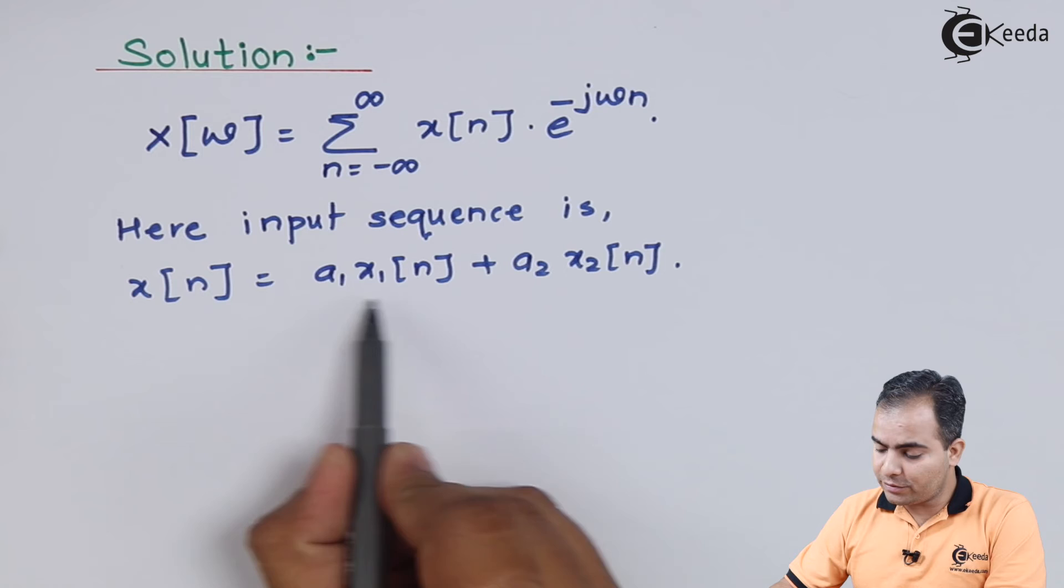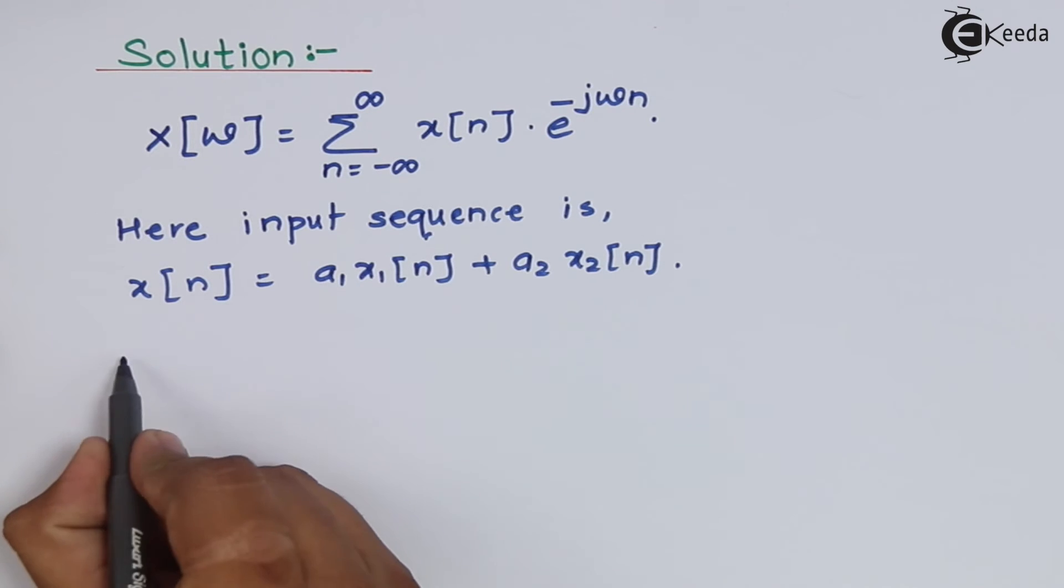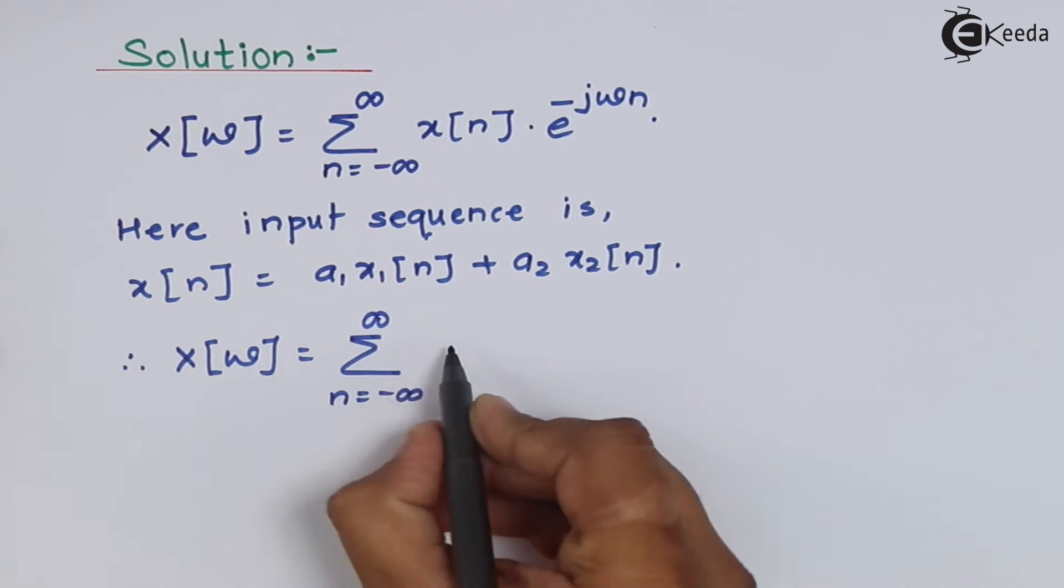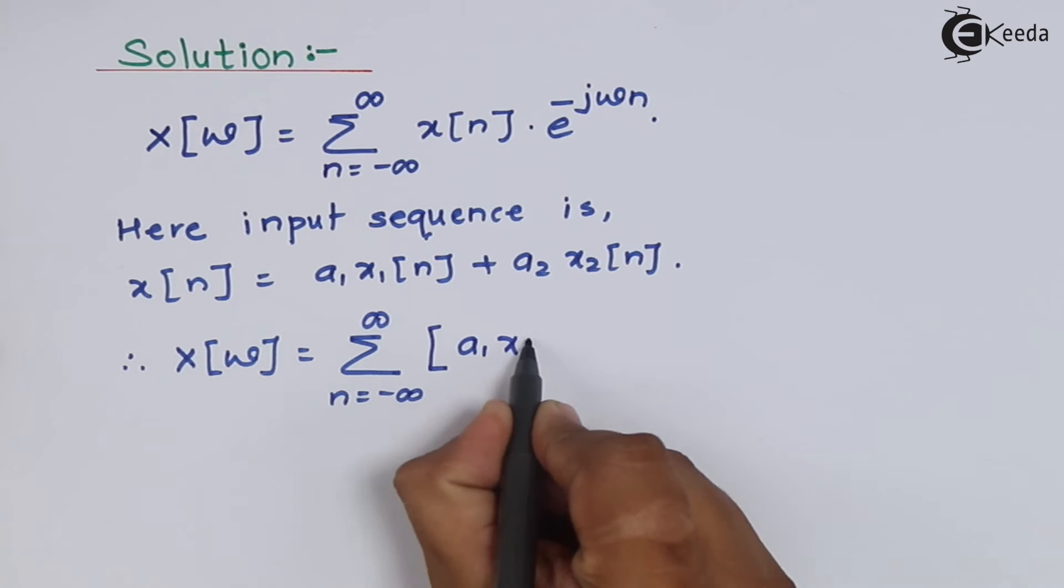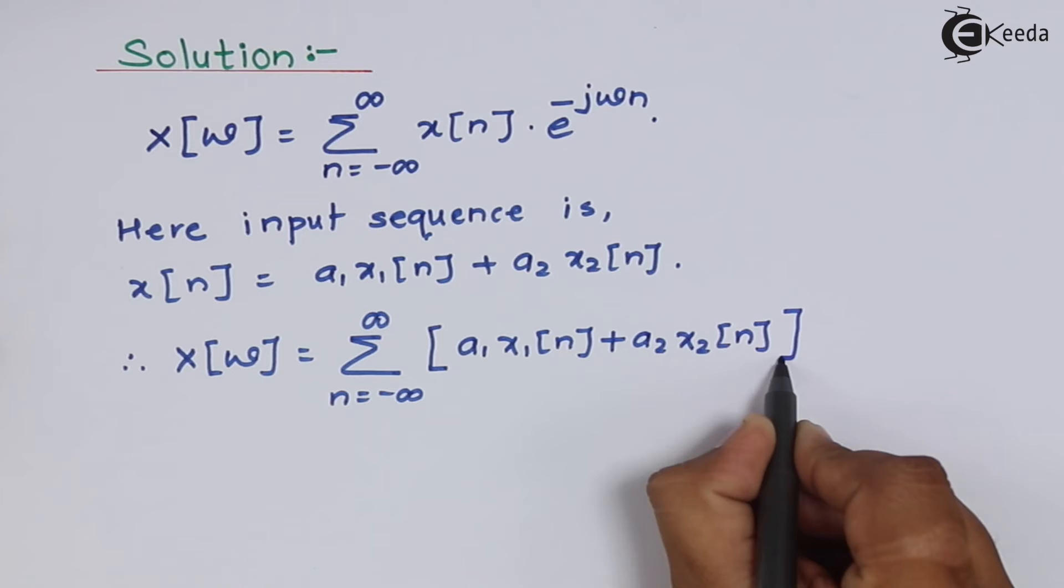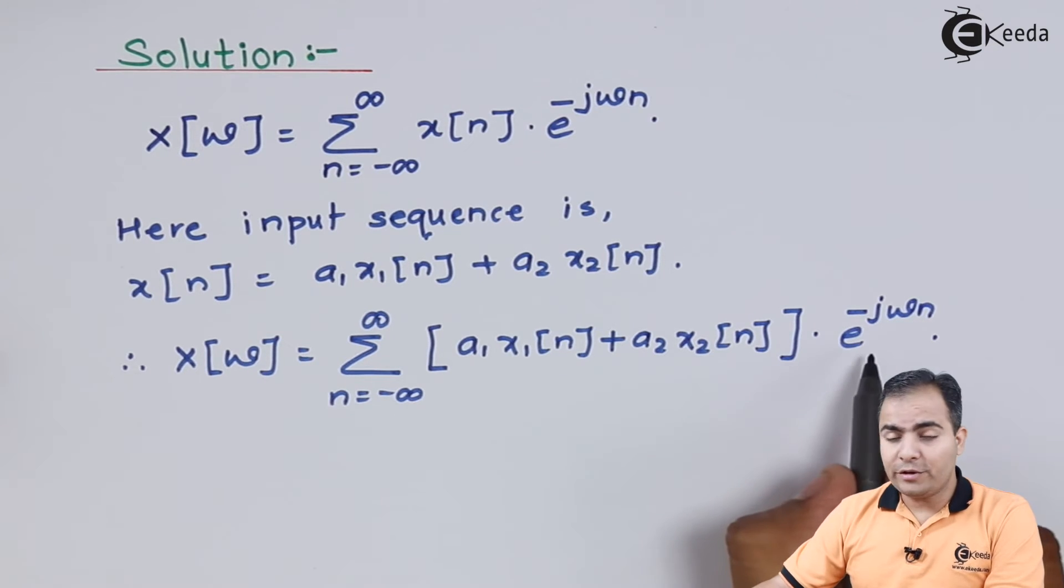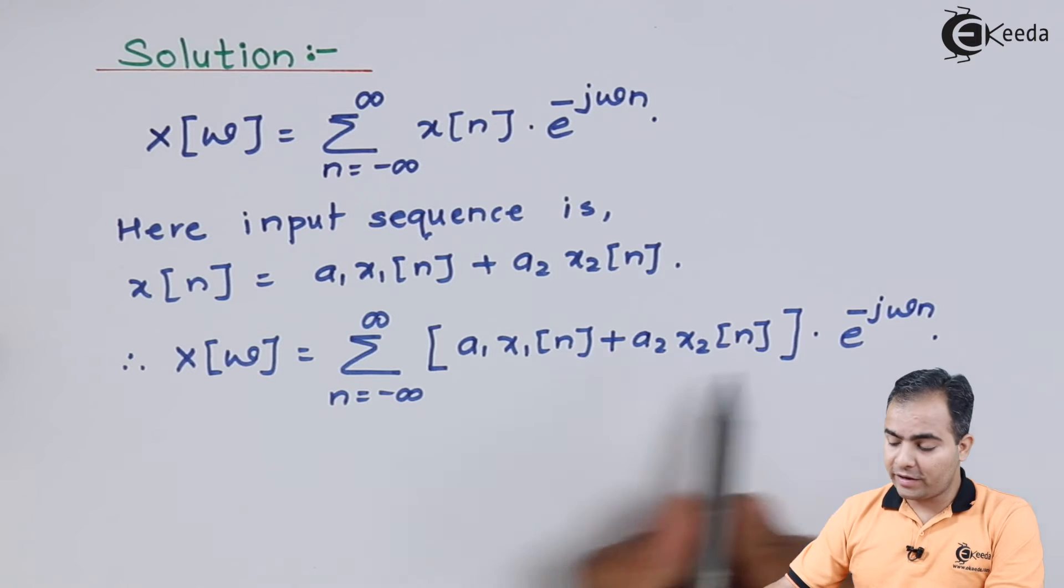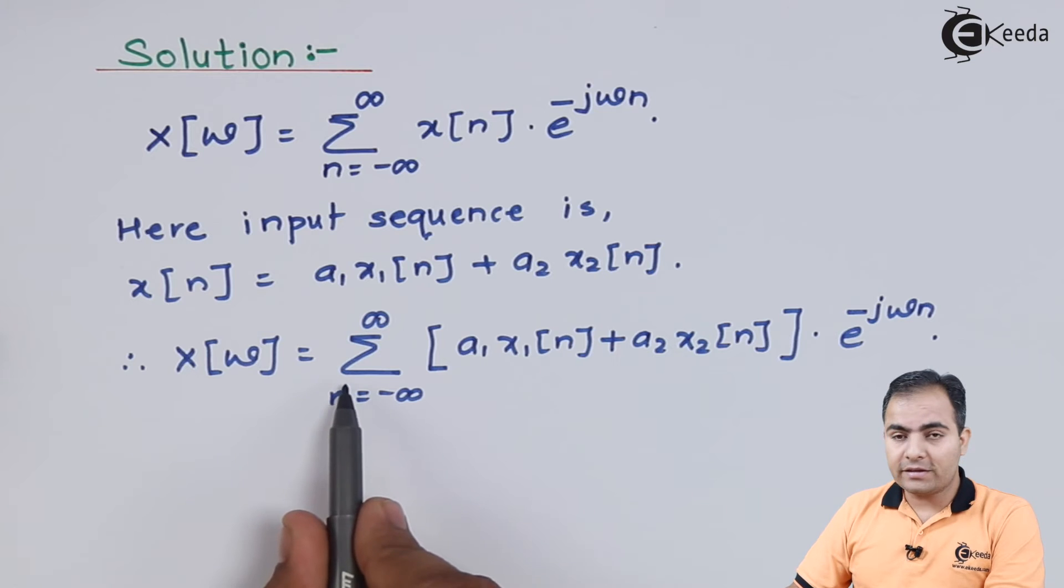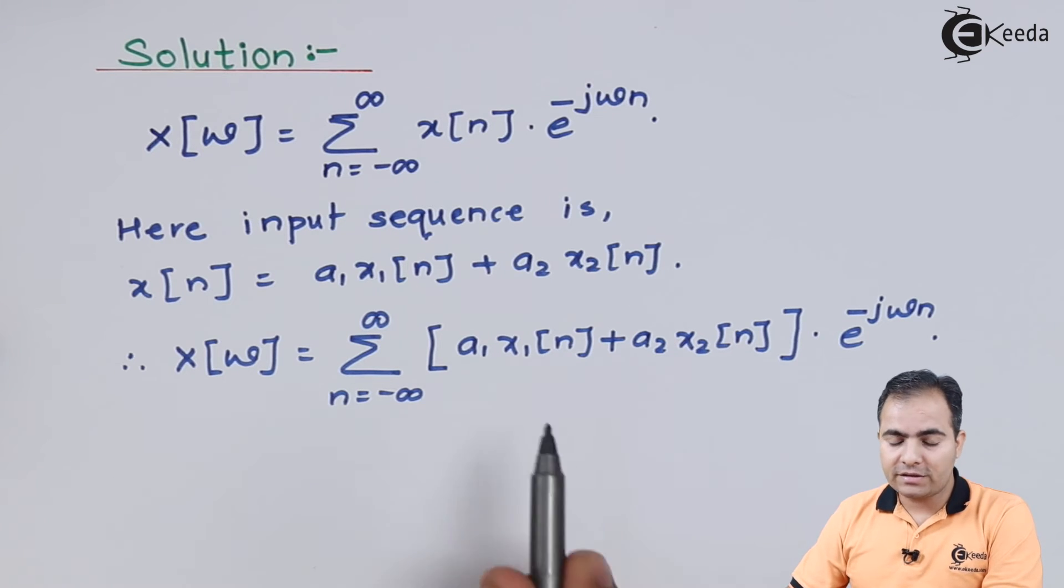So I am going to substitute this whole equation over here. Now I am going to multiply this e^(-jωn) inside this bracket, and here we have a plus sign which means we can split this summation or we can use this summation for these two functions separately.